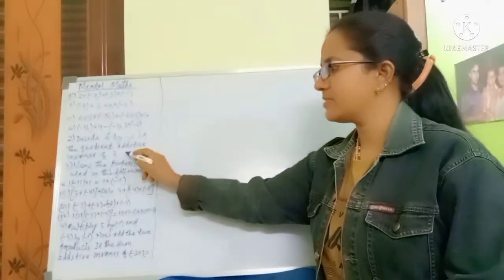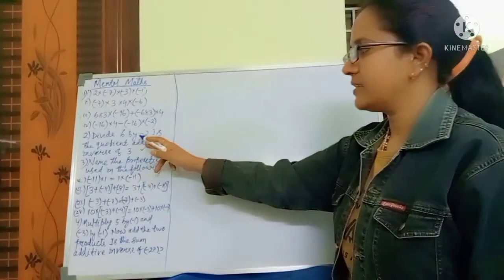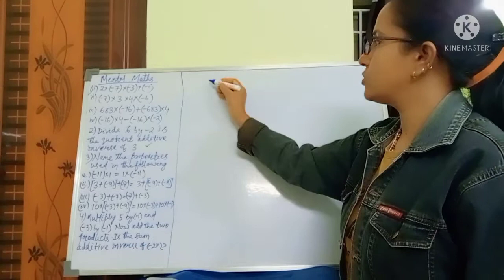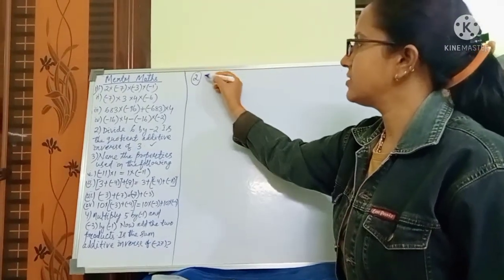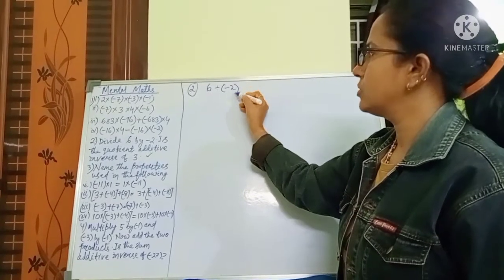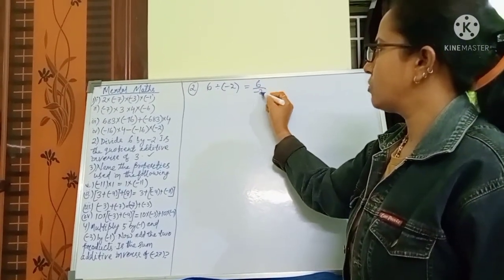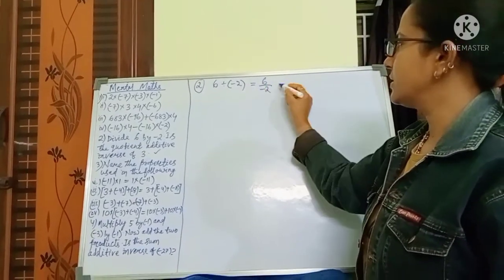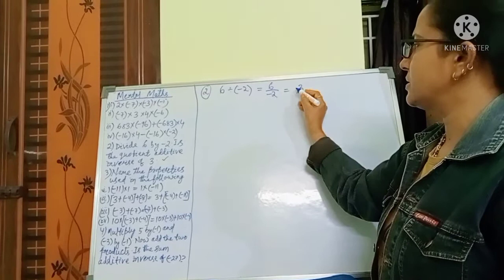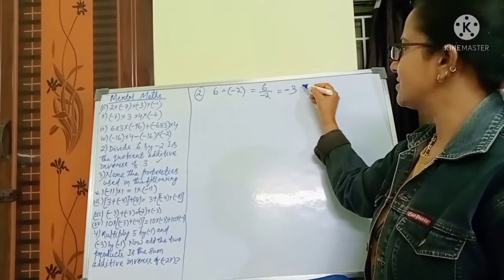Now we will discuss and solve the second problem. The question is: divide 6 by minus 2. If we divide 6 by minus 2, then 6 by 2 is 3, and positive divided by minus is minus. So minus 3 is the answer.